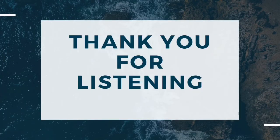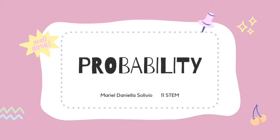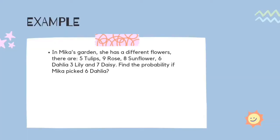Hi everyone, my name is Marielle Danielsley, and I will be showing you my example of probability. Example: In Mika's garden, she has different flowers. There are 5 tulips, 9 roses, 8 sunflowers, 6 dahlias, 3 lilies, and 7 basil. Find the probability if Mika picked a dahlia.